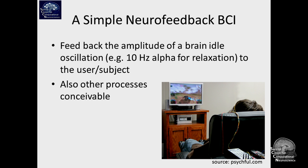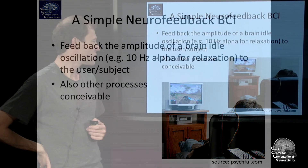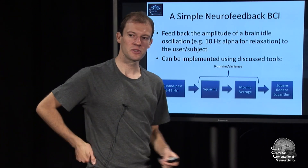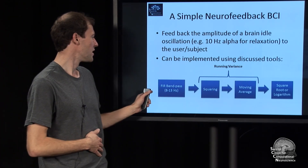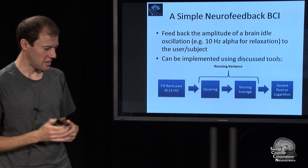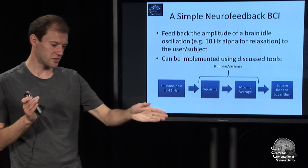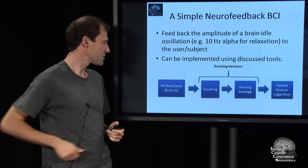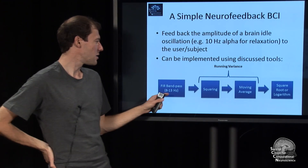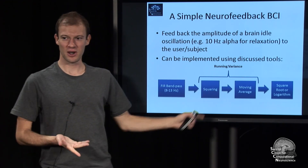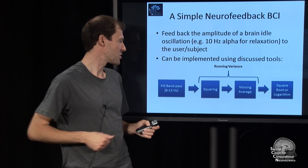With the things briefly touched on, you can already build such a system as a very simple sequence of processing steps. You apply a band-pass filter to the frequency of interest, say 8 to 13 hertz — you need the right coefficients for that, which you can design in MATLAB. Then you square every sample of that, doing it for one channel.